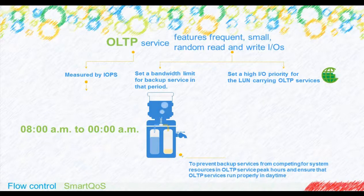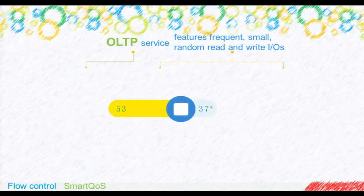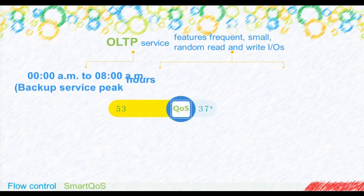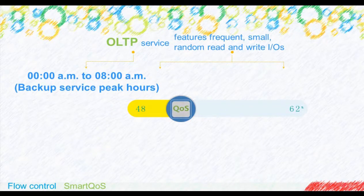To ensure that backup services run smoothly at night, set an IOPS limit for OLTP services, for example, less than or equal to 200.